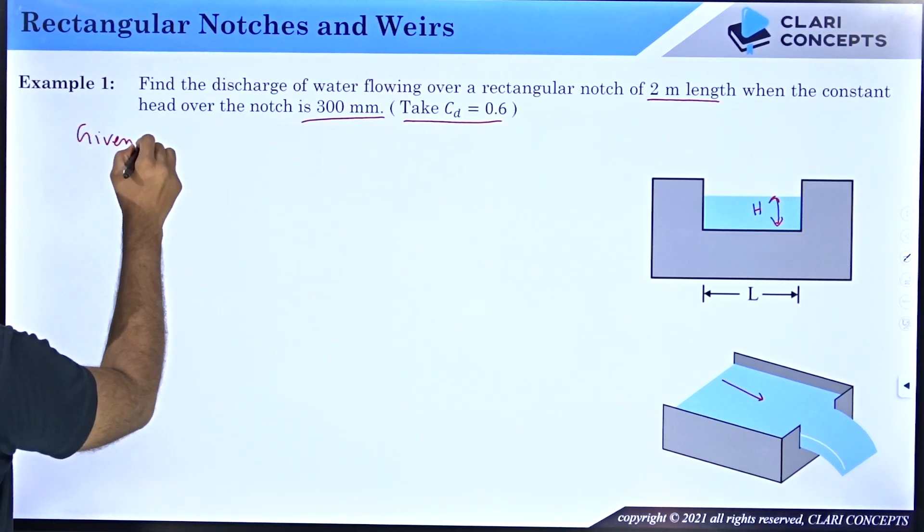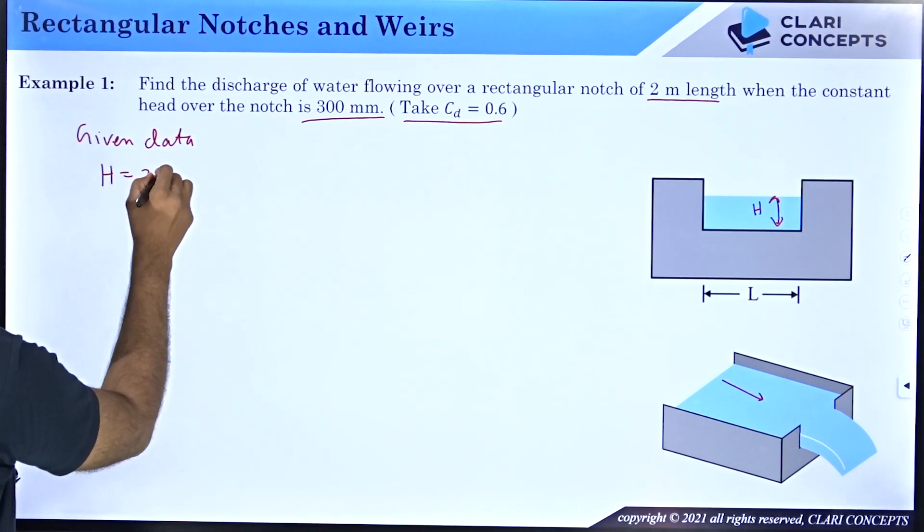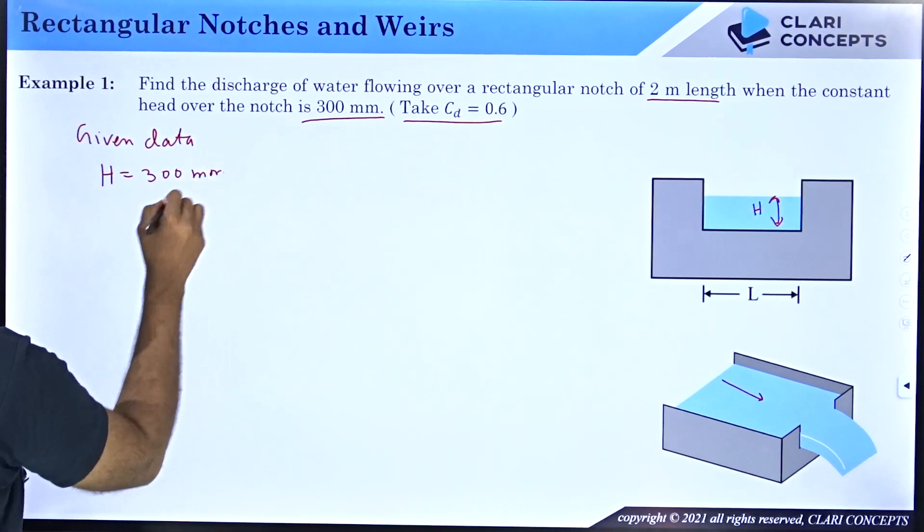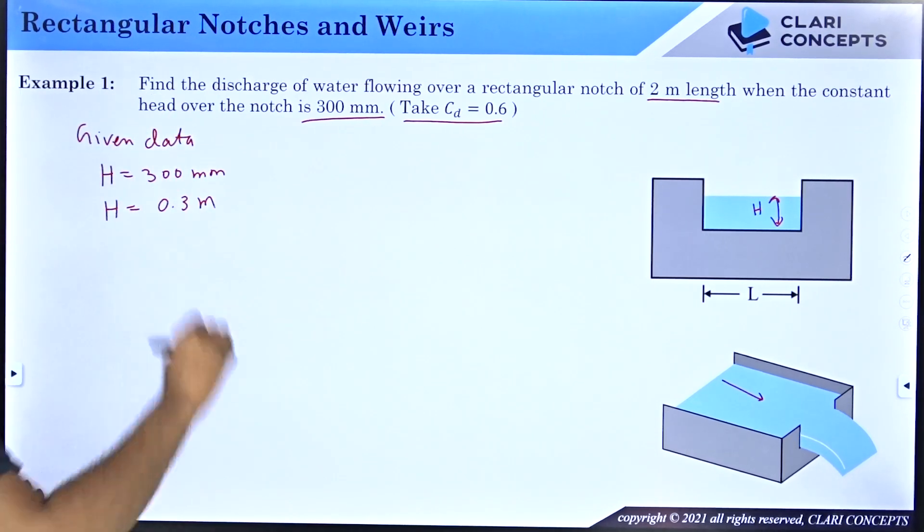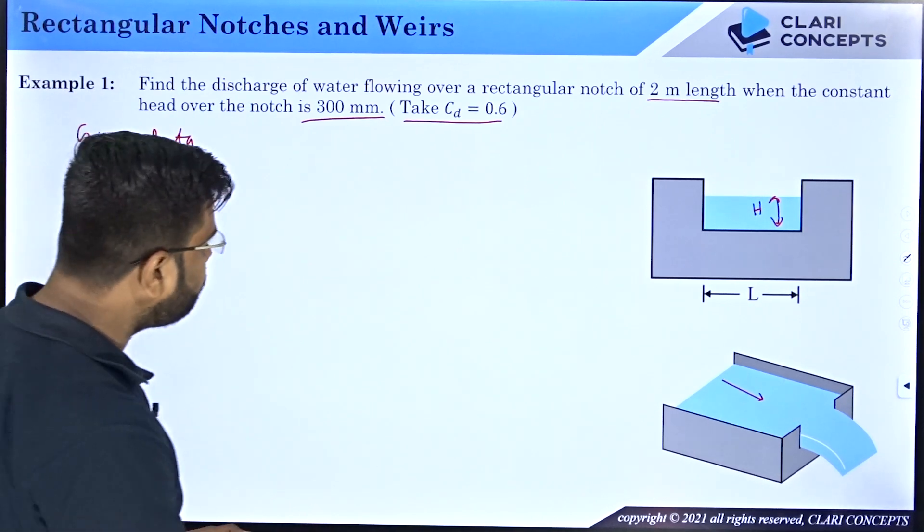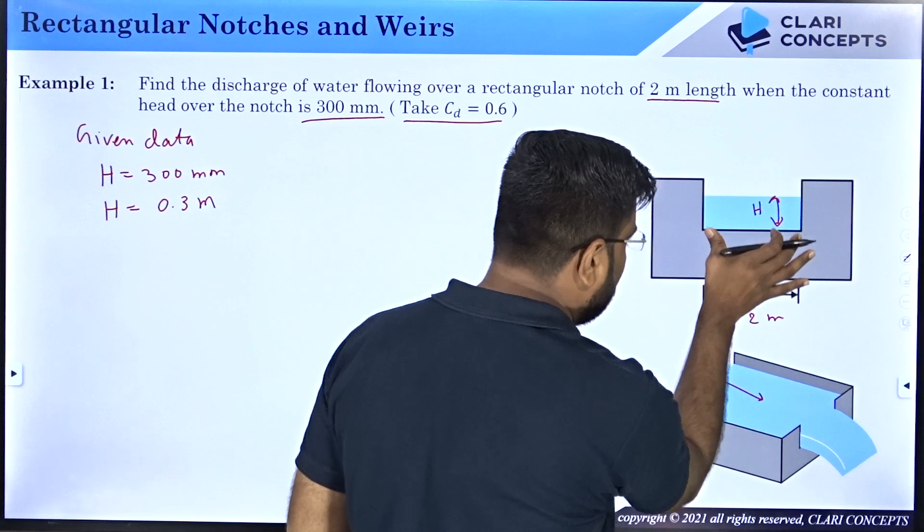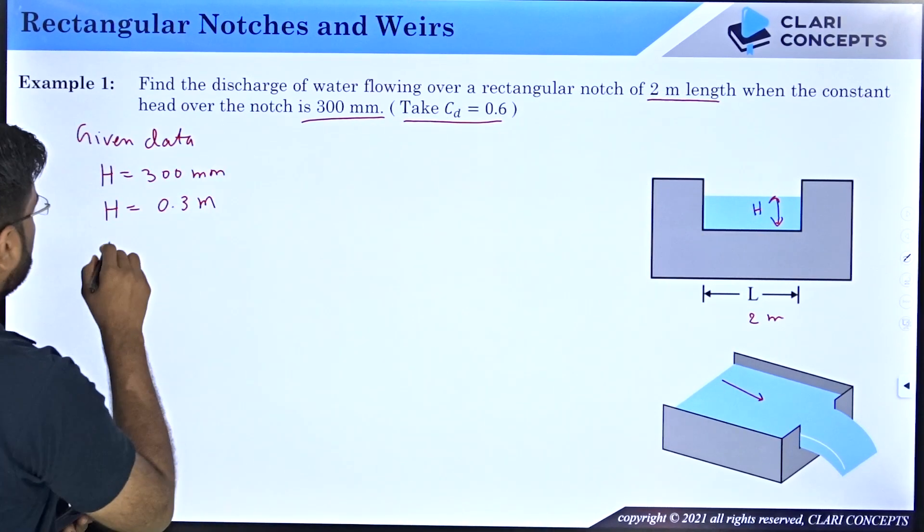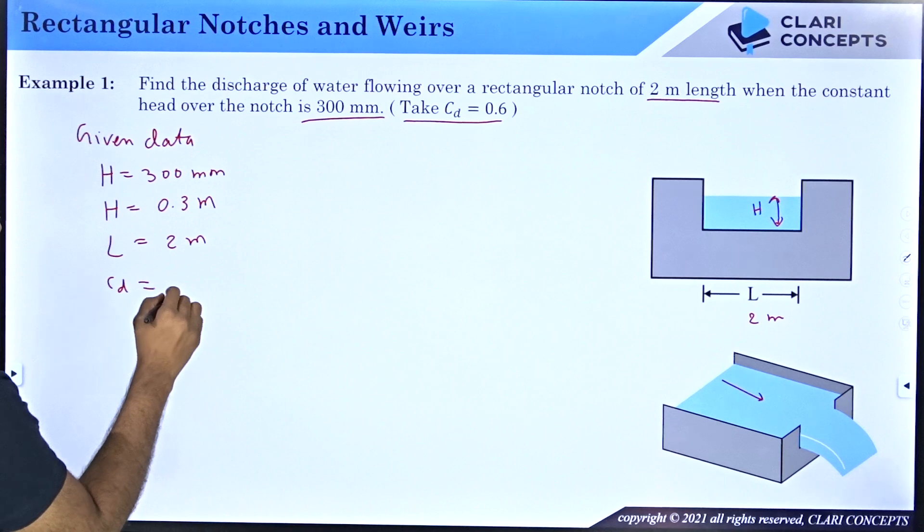I will write down what are the given data with us. I have capital H as 300 mm, and as we normally do I will put all these values in SI unit which is meter. So if you want to convert mm into meter you have to divide the value by 1000. Then the length is given to you as 2 meters. So I will put L equals to 2 meters and CD is given to you as 0.6.